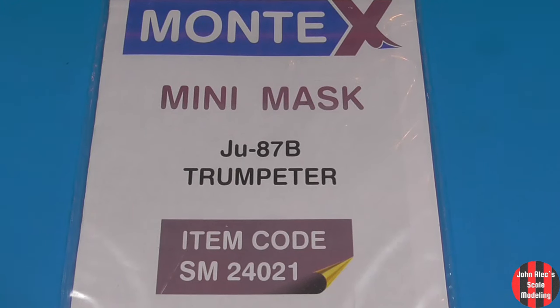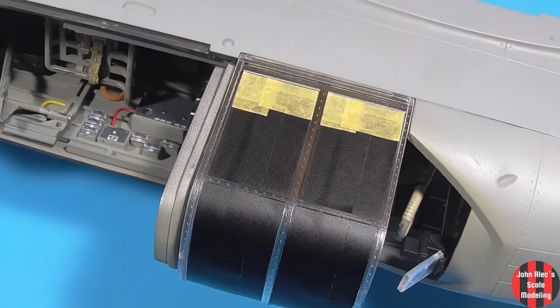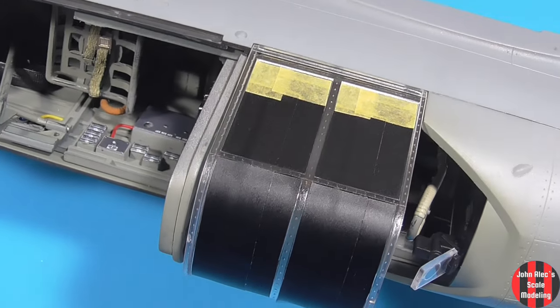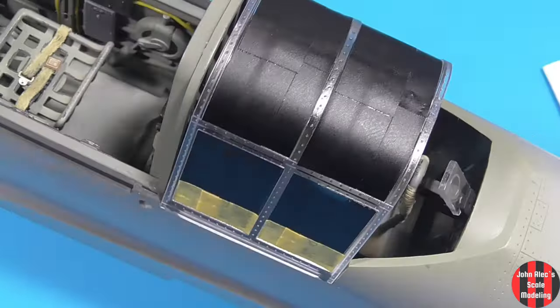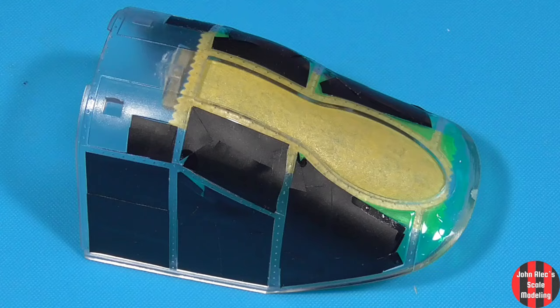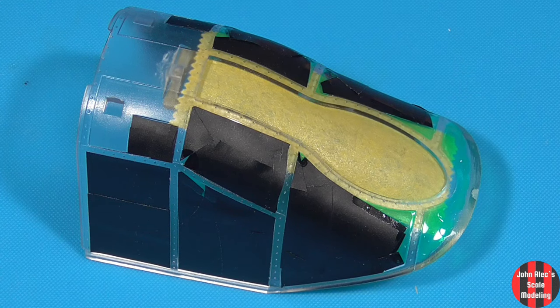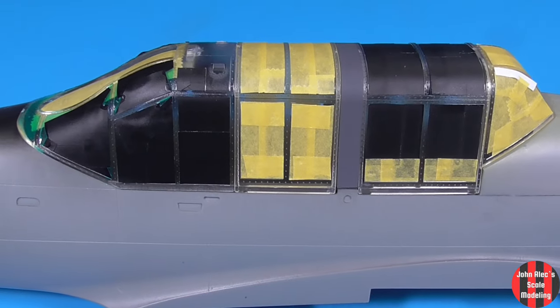I bought this Montex canopy mask set. It wasn't very much. But as it turns out, the version A and version B canopies were sufficiently different. So I just used them and some other tape to cover up the canopy, and some liquid mask as well. Now this is all ready for priming and metal coating.